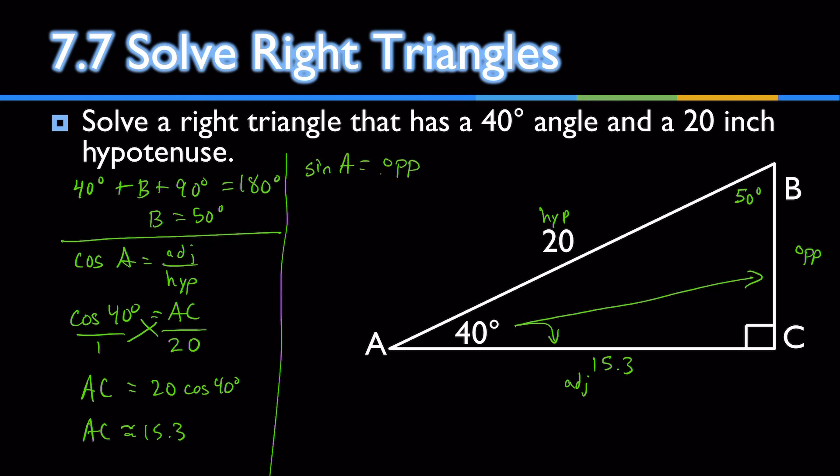Sine of 40 is the opposite over the hypotenuse. Over 1 and cross multiply. BC is 20 times sine of 40, which is approximately 12.9. And we have now solved this right triangle. We found all the sides and all the angles.